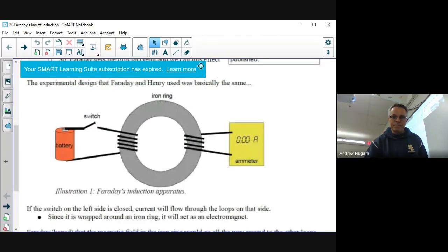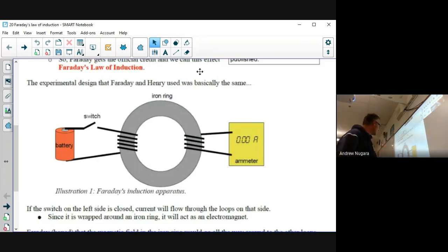This little setup here where you've got wires wrapped around an iron ring and a battery. They thought that if they turn the battery on or close the switch here, then this will create an electric current which will create a magnetic field which will go around to here and create an electric current over here.